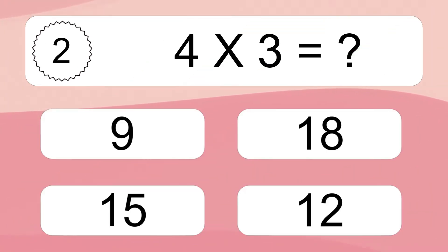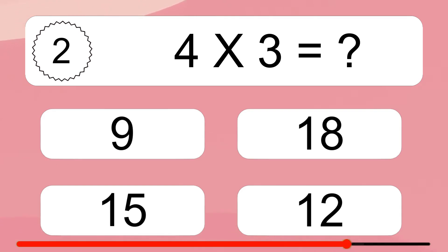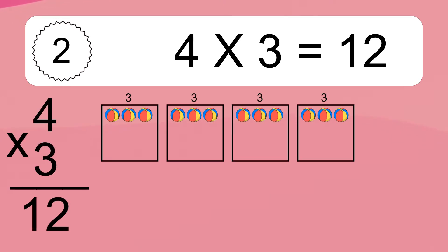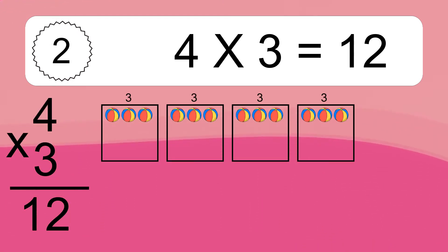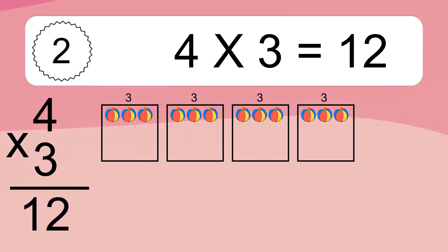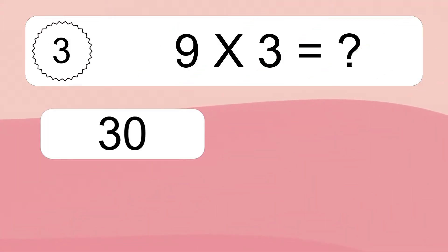4 times 3 equals what? 4 times 3 equals 12. We have 4 boxes and each box has 3 colorful balls inside. If you count all the balls in all the boxes together, you will have 4 times 3 balls. This equals 12 balls.